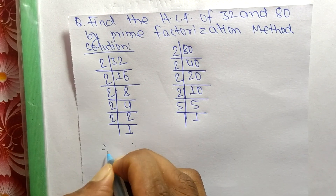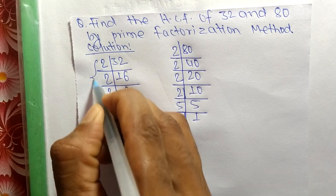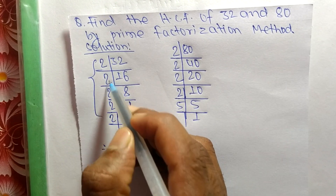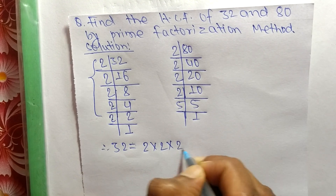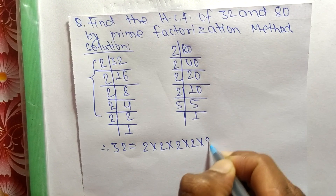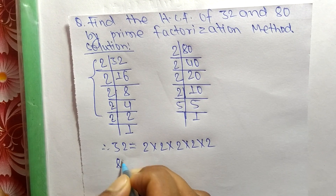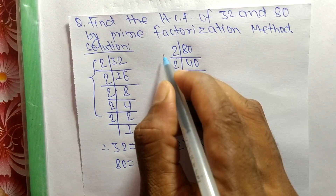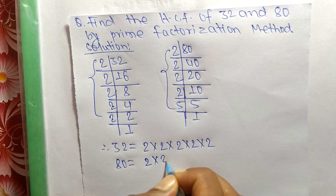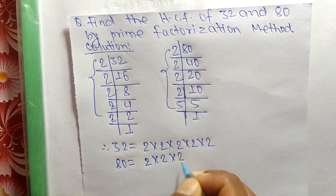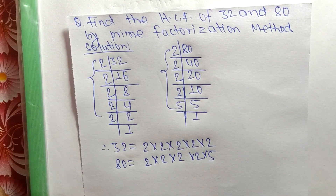From these prime factors we can write: 32 is equal to 2 × 2 × 2 × 2 × 2 (five 2s). Likewise, 80 is equal to 2 × 2 × 2 × 2 × 5.